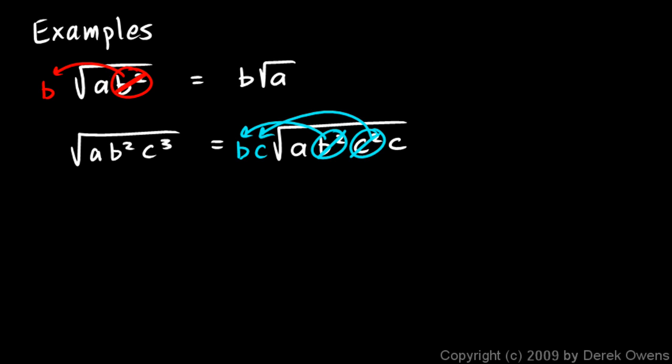So the b and the c pop out from under the radical, and we're left with the a and the c still under there. So we end up with bc times the square root of ac. And that's considered simplified. Once we get all the perfect squares that we can find and bring them out from under the radical, then it is simplified.